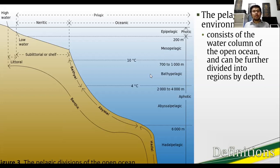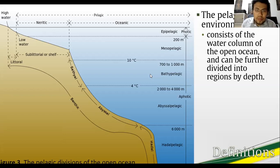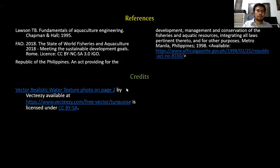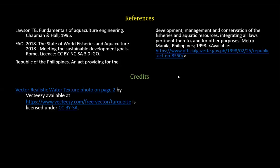There is also the aphotic zone, which is where light cannot penetrate anymore. The depth of the aphotic zone is approximated and simplified here for presentation purposes, as it can vary from location to location. In the next lecture, we have the general overview of aquaculture and the corresponding engineering applications. Thank you for listening — I will see you then.